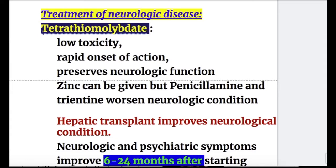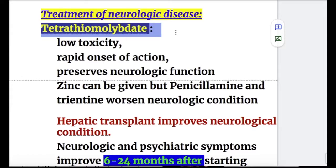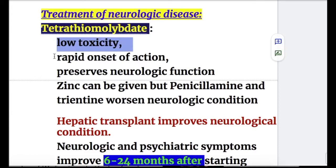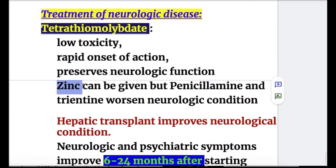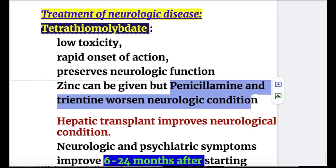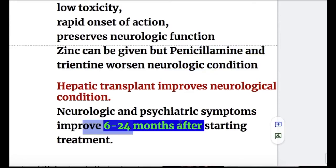For neuropsychiatric disease, the drug of choice is tetrathiomolybdate. It has low toxicity, rapid onset of action, and preserves neurological function. Zinc can be given with tetrathiomolybdate, but penicillamine and trientine worsen neurological conditions. Hepatic transplant improves neurological conditions. Neurologic and psychiatric symptoms improve 6 to 24 months after starting treatment.